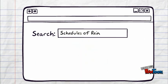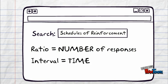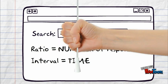Skinner also pioneered the concept of schedules of reinforcement. When we talk about schedules of reinforcement, ratio means behavior — as in how many times the individual must respond with the desired behavior in order to get a reinforcement. Interval means time, as in how long the individual must wait between reinforcement.